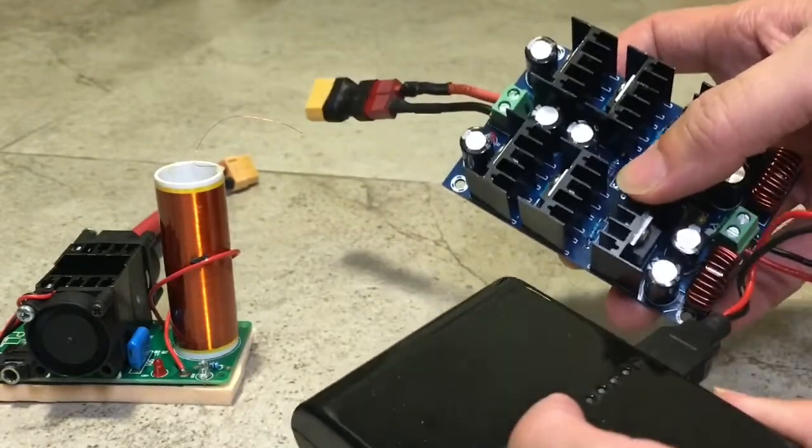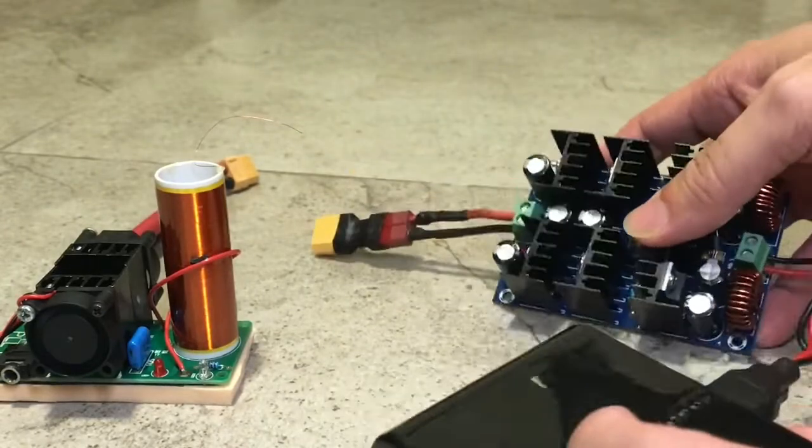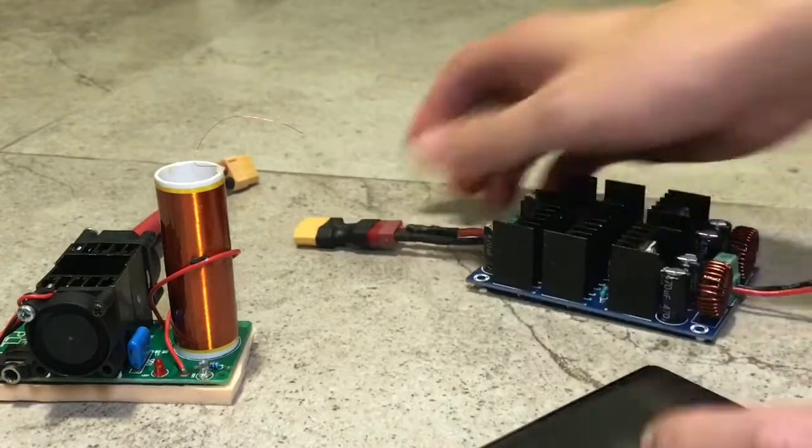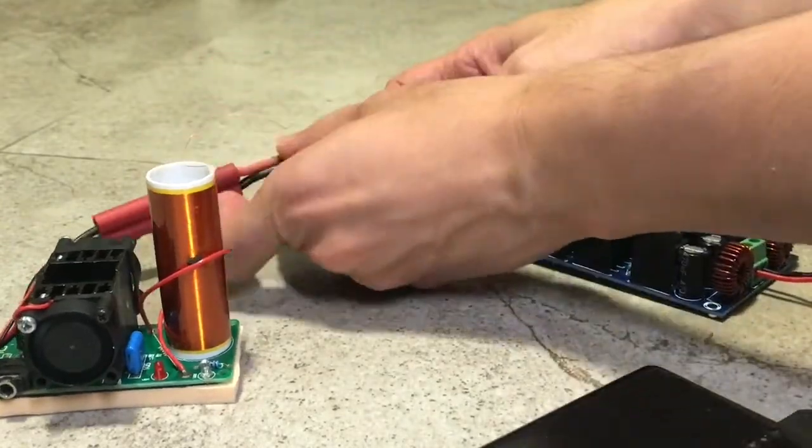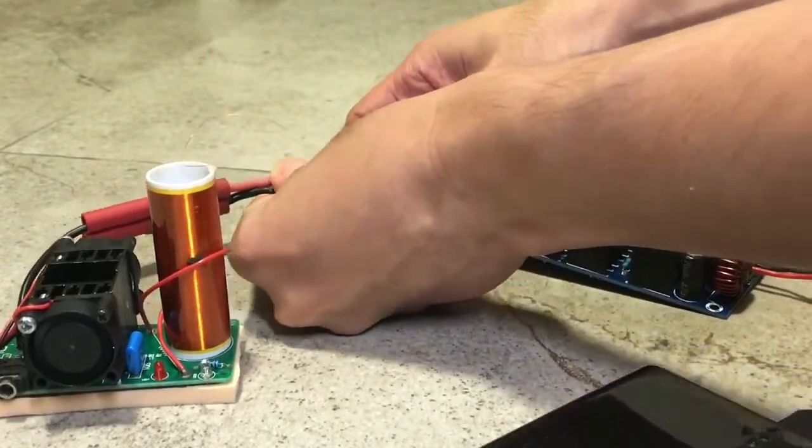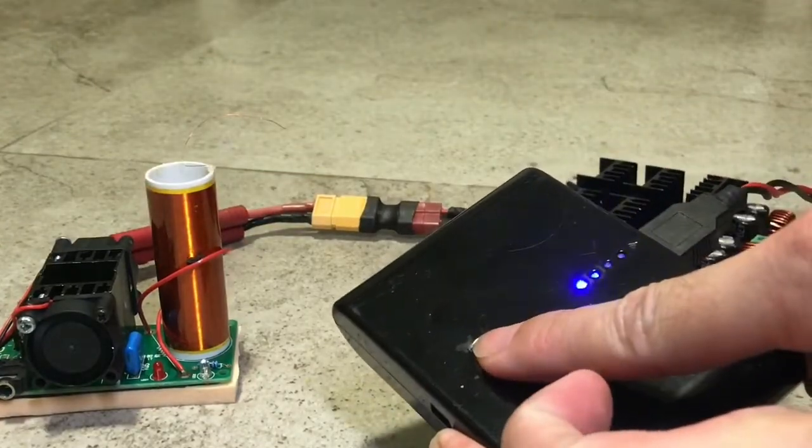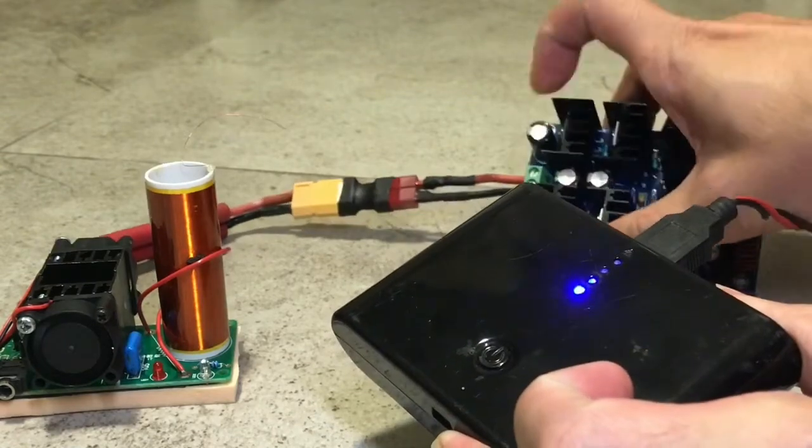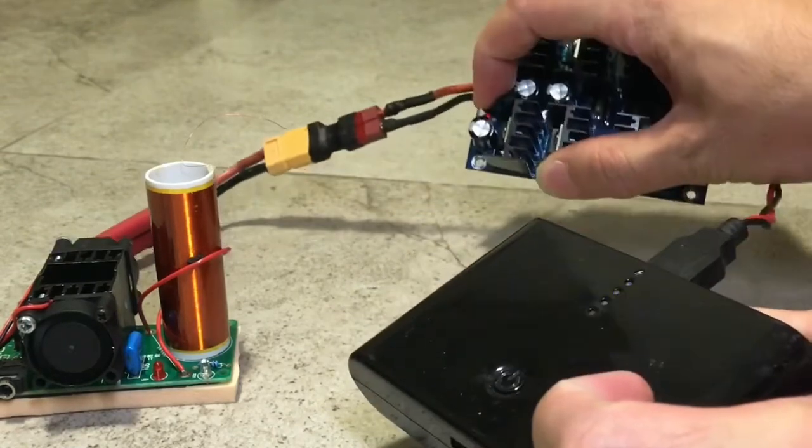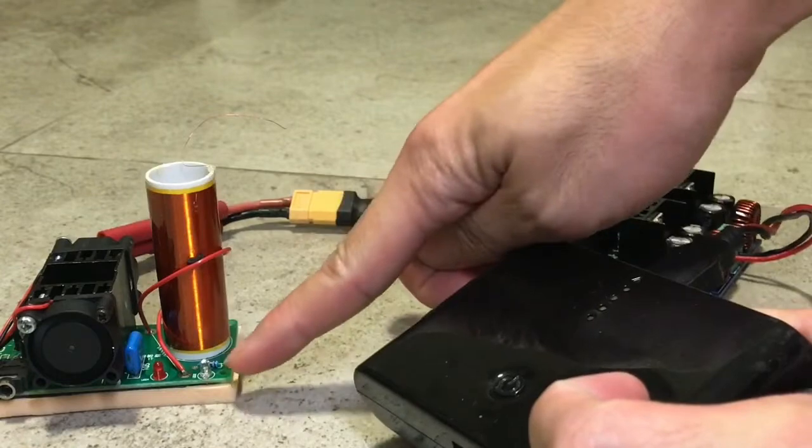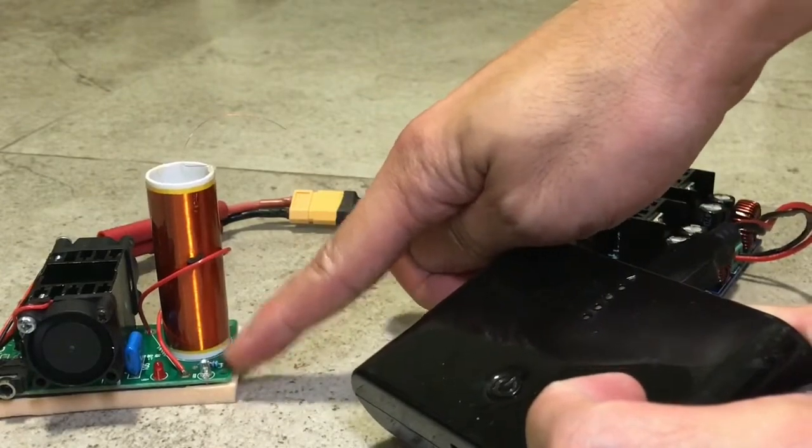So this power bank performs worse than the 5000mAh one. Anyway, I'm going to try to power up the Tesla coil to see what happens. Nope. No lights here. And no power to the Tesla coil at all.